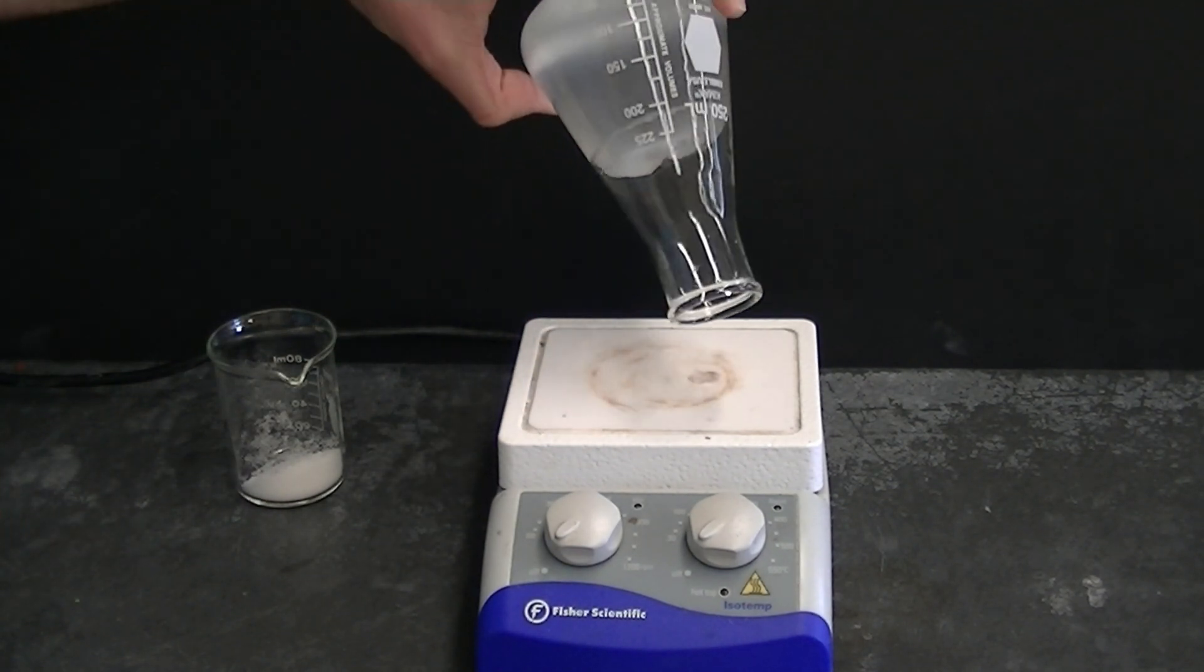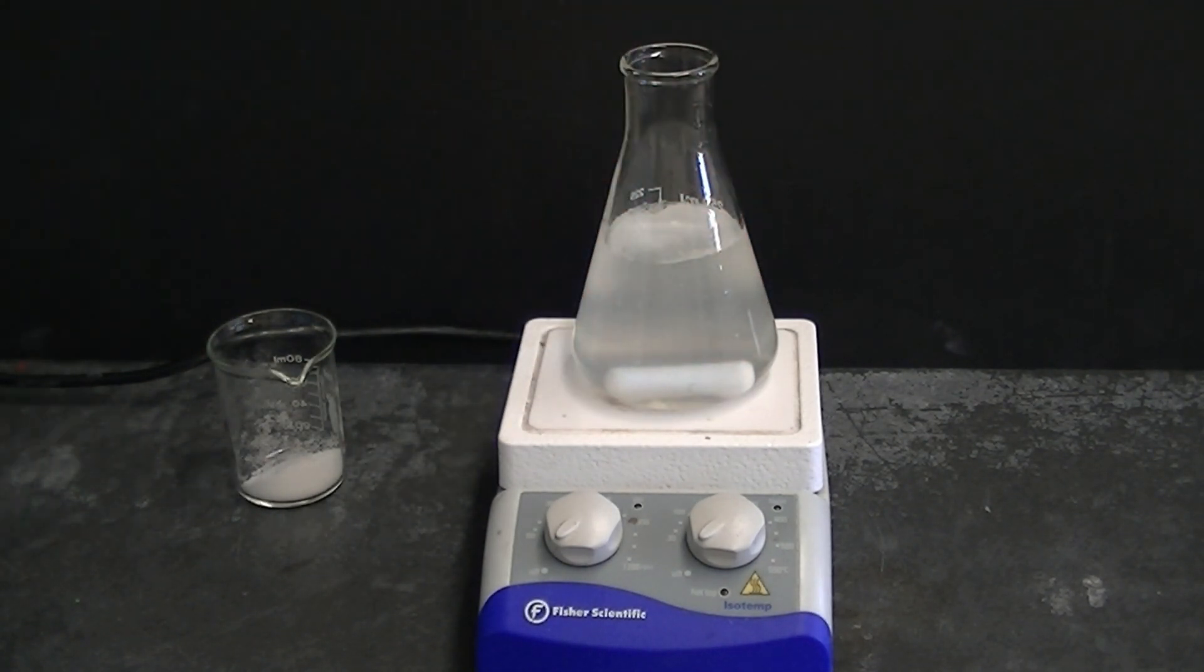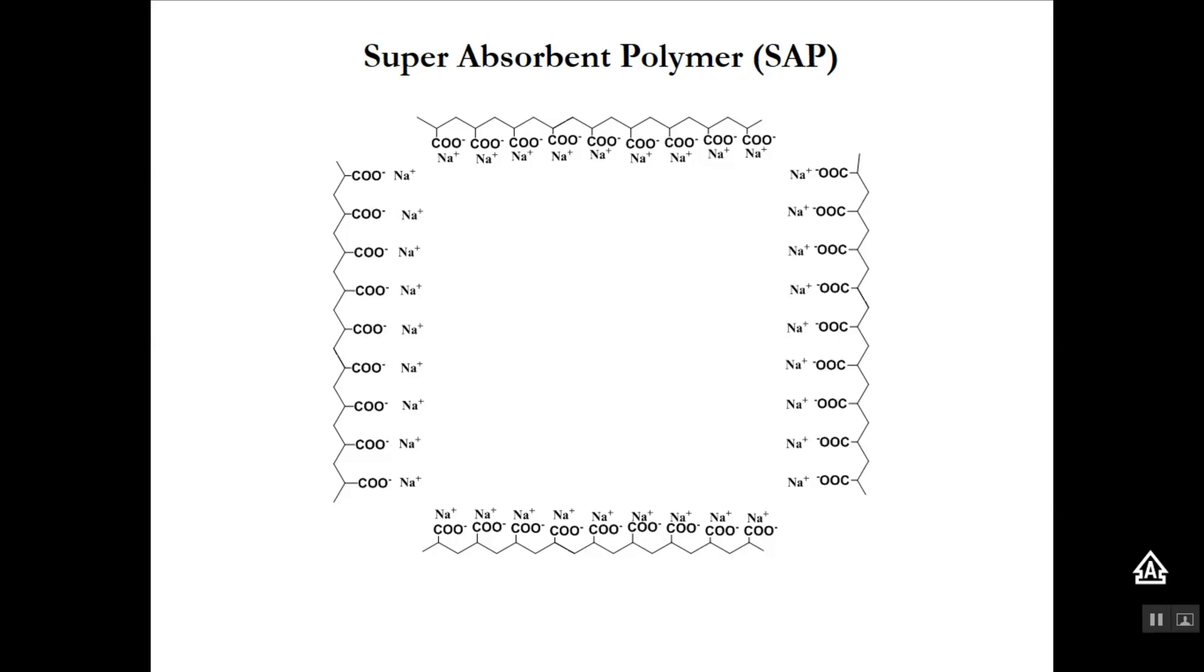To understand how this happens, let's look at the chemical structure of sodium polyacrylate. Here, you're looking at the chemical structure of four strands of sodium polyacrylate.